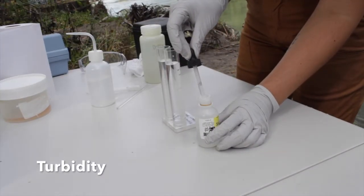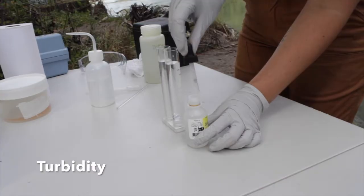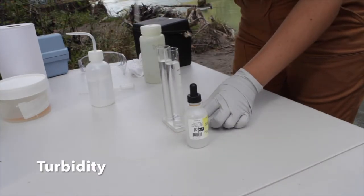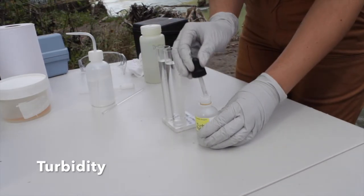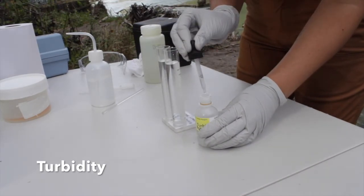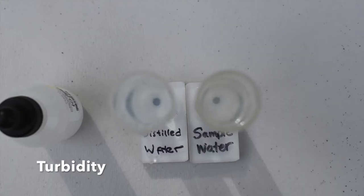Next, we will add a half milliliter dropper full of our standard turbidity reagent to the distilled water tube. We will continue doing this half a milliliter at a time until we see the dots in each of the tubes with equal clarity.